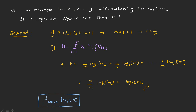The question is: if I have m messages — m1, m2, m3, and so on up to m messages — with probabilities p1, p2, up to pm, and if messages are equi-probable so that the probability of every message is the same, what is the entropy? We want to prove that H_max is equal to log to the base 2 of k. Since probabilities are the same and must sum to 1, and we have m messages, m into p equals 1.